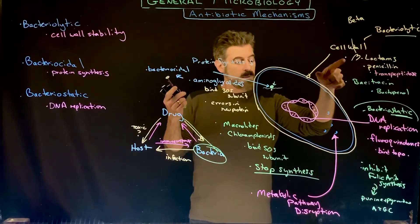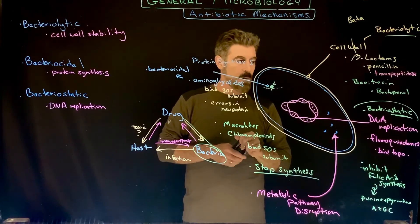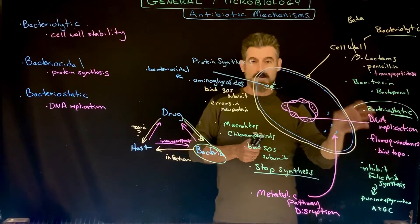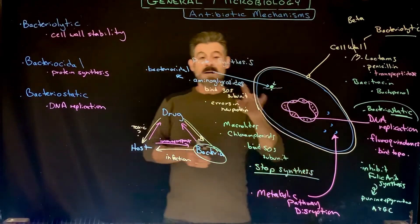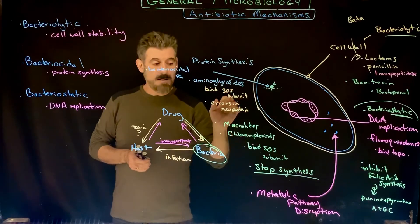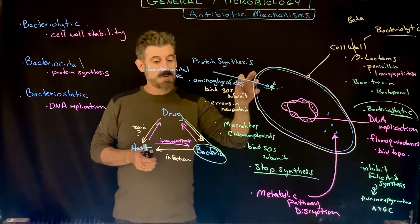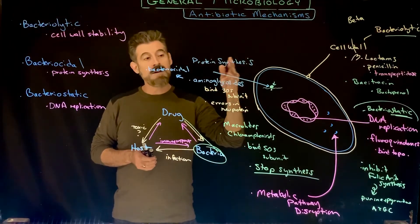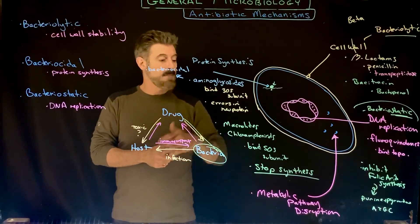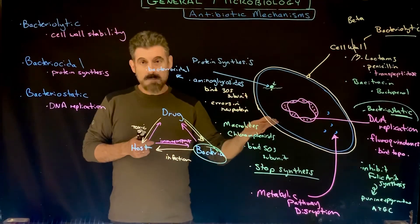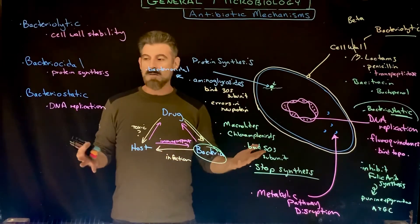As far as the bigger groups go, beta-lactams are ones that are specifically going to affect the cell wall. The quinolones are ones that are affecting the DNA replication process specifically. Aminoglycosides, macrolides, and chloramphenicols - these are all groups that have something to do with interfering with protein synthesis, and they do it in different sorts of ways. They can result in either making faulty proteins or not making proteins at all.